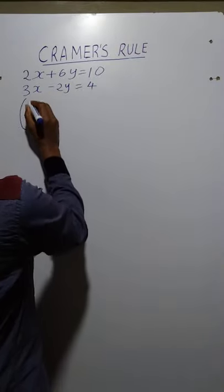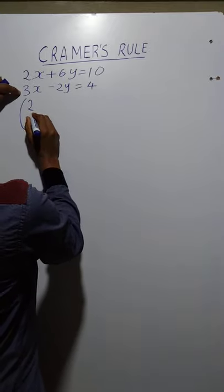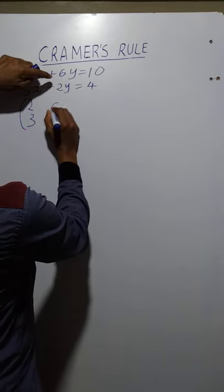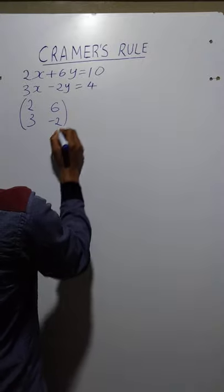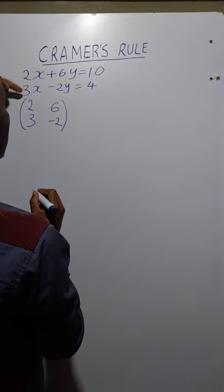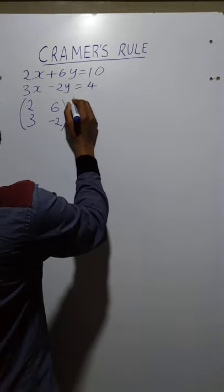So we shall have it look like 2, 3, 6, negative 2. We have taken the coefficients and formed the first matrix.